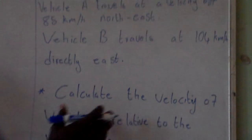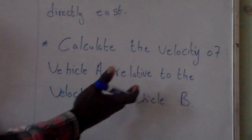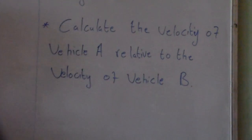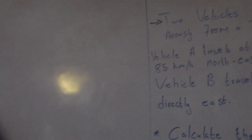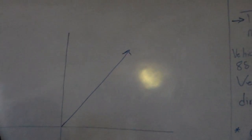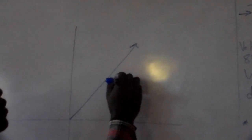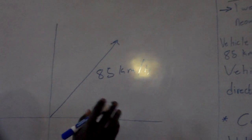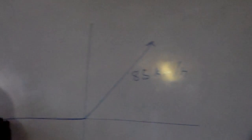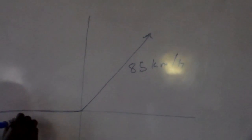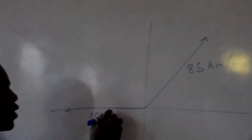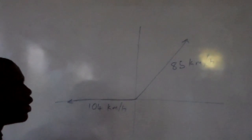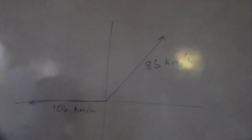The question asks us to calculate the velocity of vehicle A relative to the velocity of vehicle B. To solve this, we resolve it in a diagram. In the diagram, vehicle A travels north-east at 85 km per hour, and vehicle B travels directly west at 104 km per hour. We then resolve this using the parallelogram method.